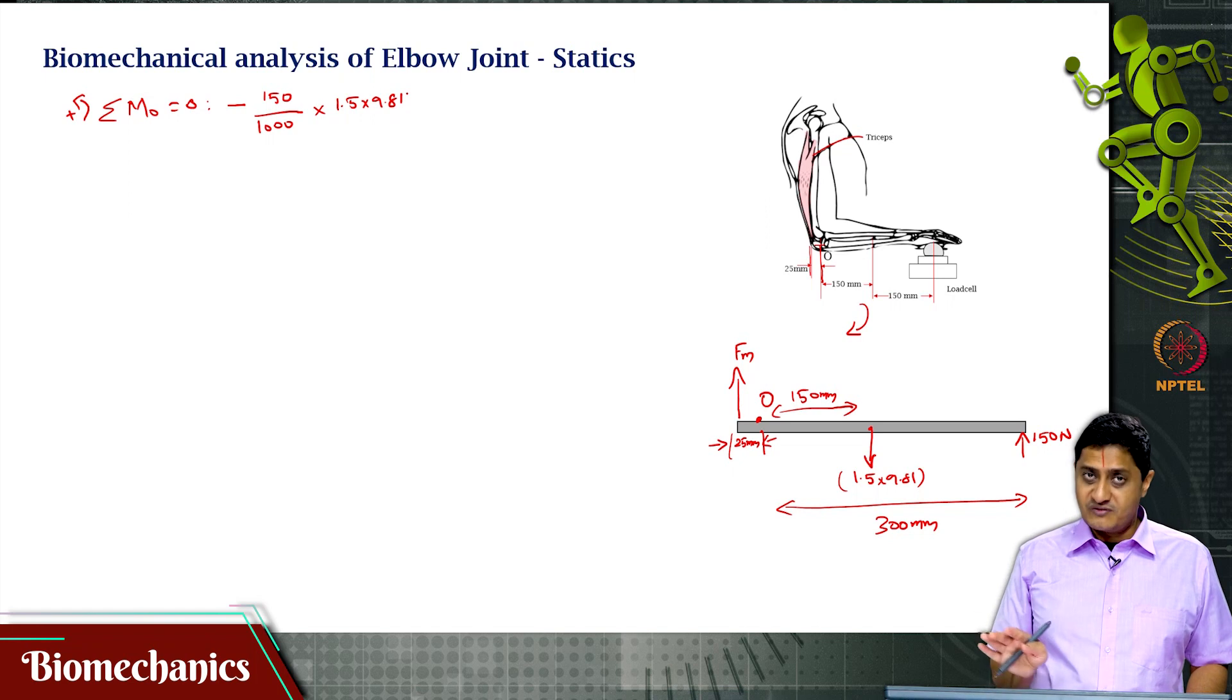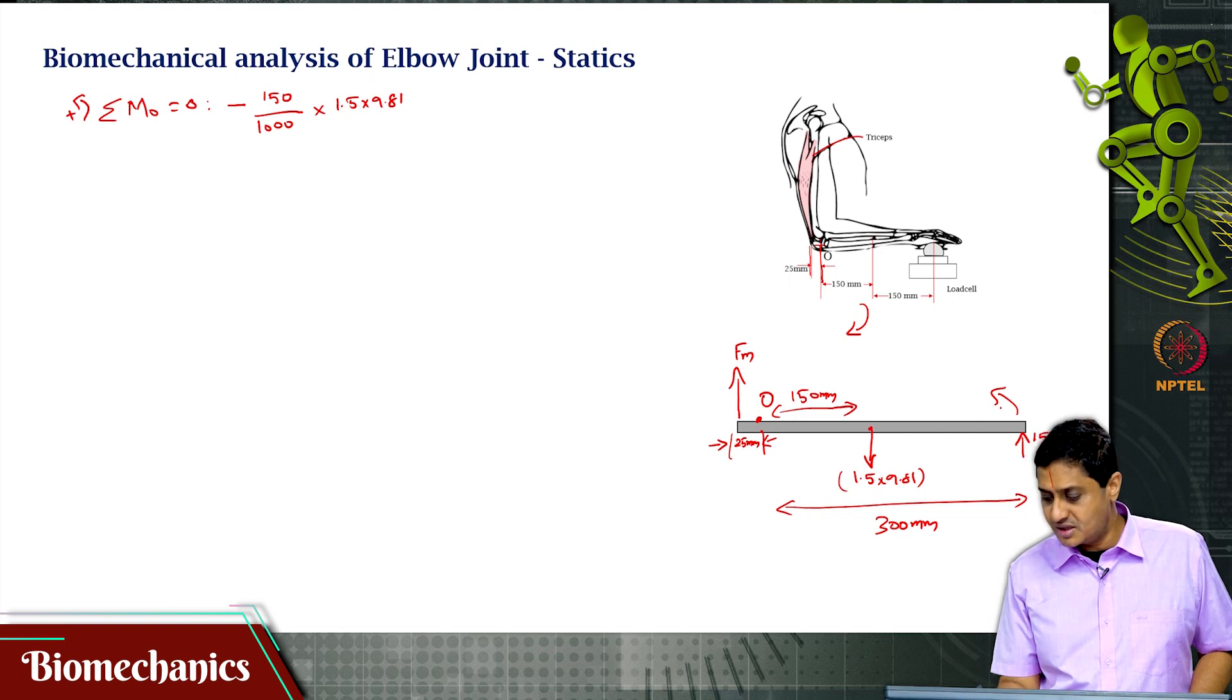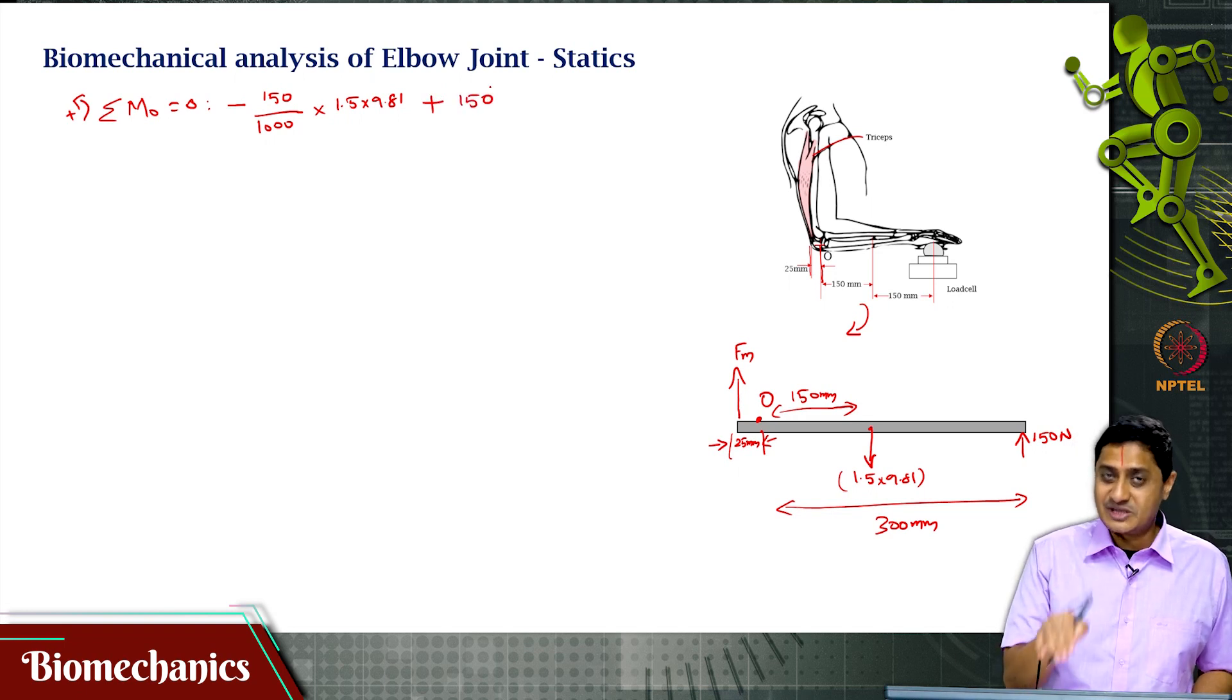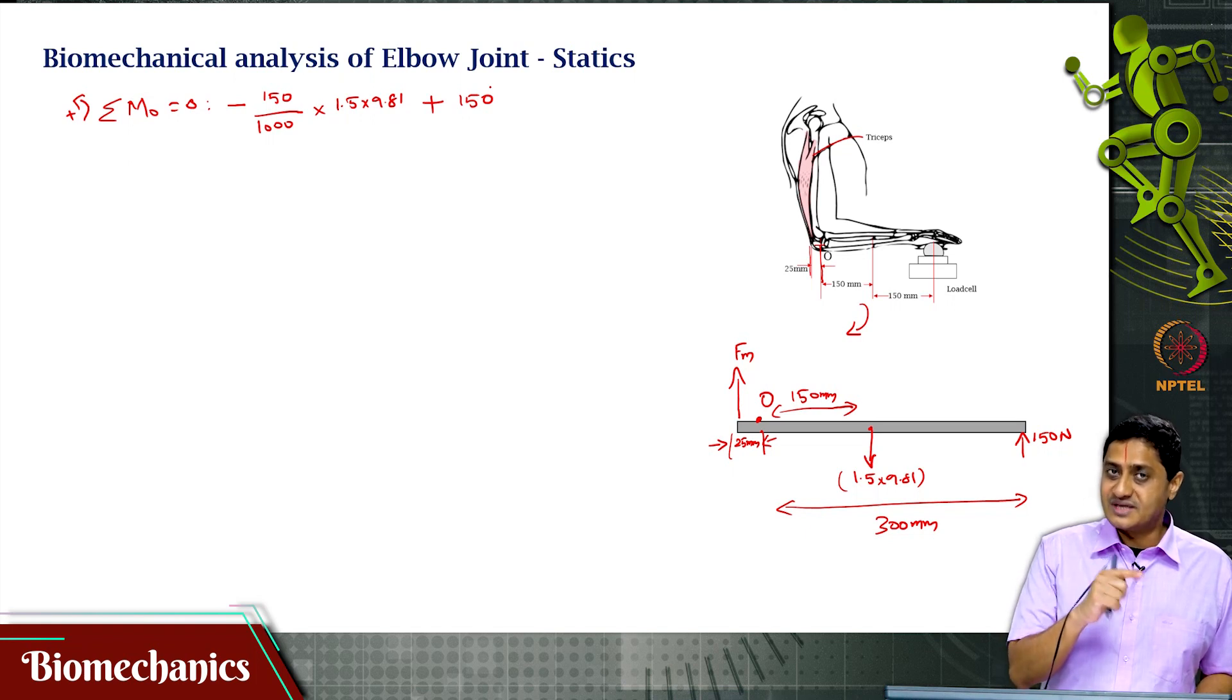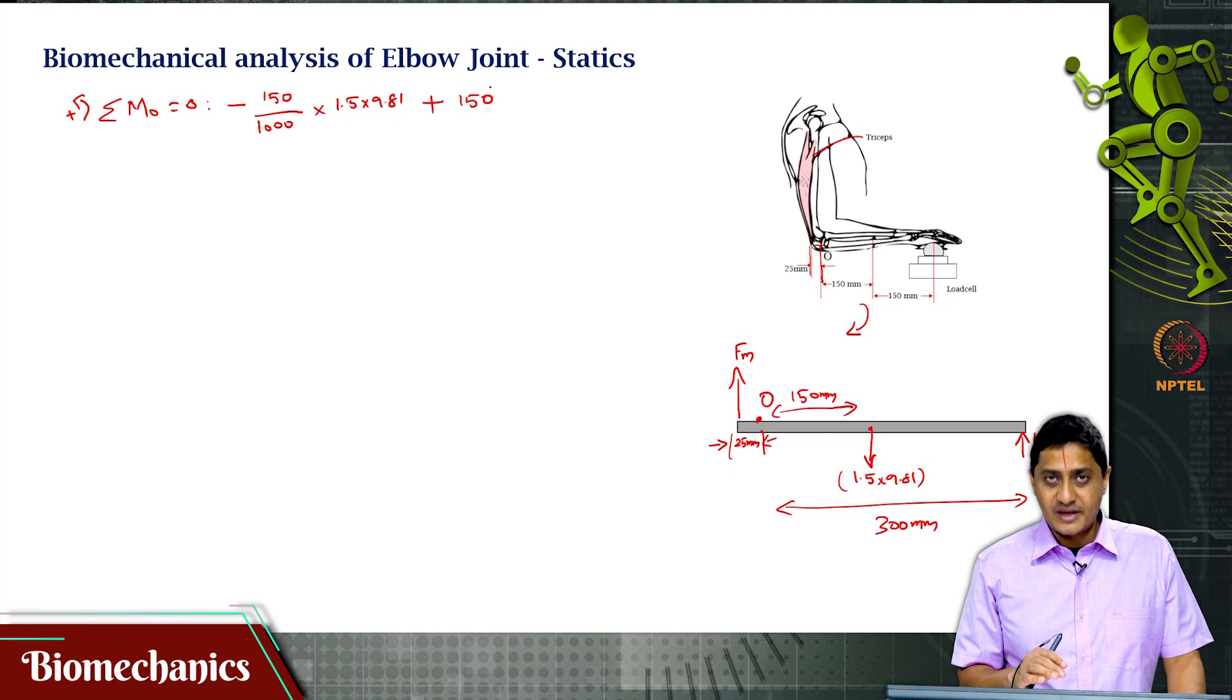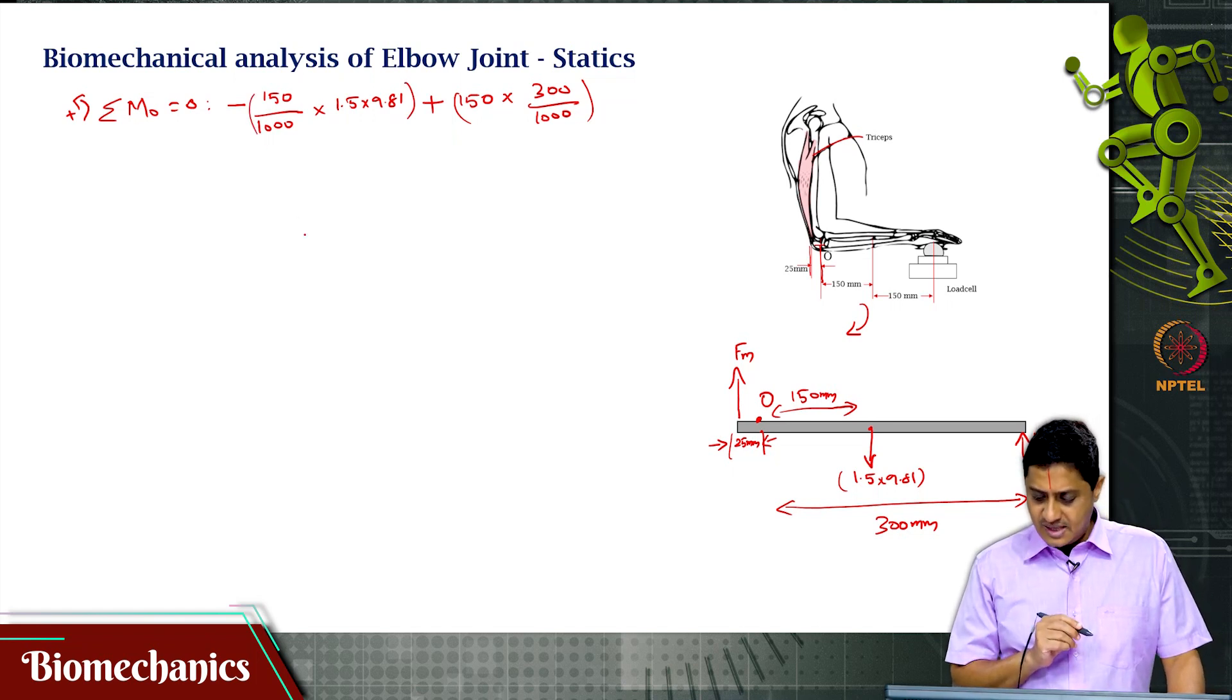Remember to include the 9.81 explicitly otherwise you will forget. 1.5 kg is not 1.5 newtons. It has to be multiplied by 9.81 and not 10. 1.5 times the acceleration due to gravity is perhaps 14.7. Then this reaction force from the load cell is going to cause a counter clockwise moment. Plus 150 newtons times 0.3.